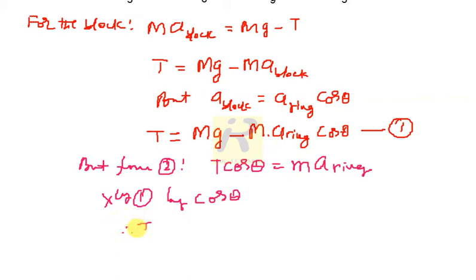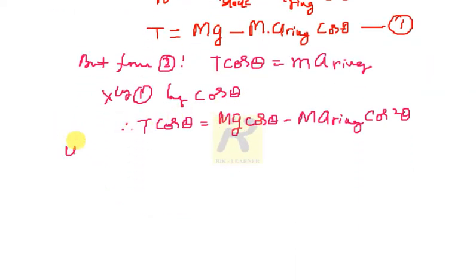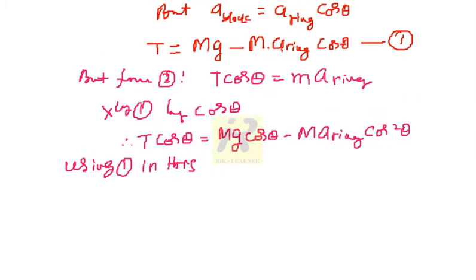So, then what happens? It is T cos theta is equals, it is mg cos theta minus m a ring cos square theta. So, now use equation 1 here. So, using 1 in this, what you can say? So, this is equal to, this one is equal to, I simply put, this is nothing but m a ring that is equals mg cos theta minus m a ring cos square theta.